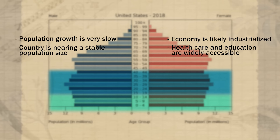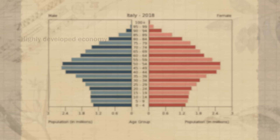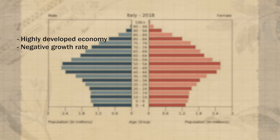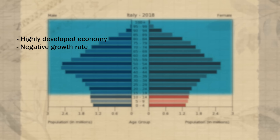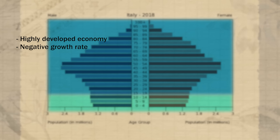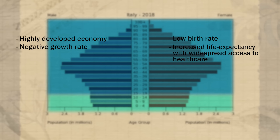When a country's economy becomes really highly developed, we actually see the growth rate slow down so much that it can become negative. This is because people are having fewer children than it takes to replace themselves. These age structure diagrams have larger portions in reproductive and post-reproductive age than in pre-reproductive age — both because birth rate is so low and because life expectancy has increased with widespread access to quality healthcare.